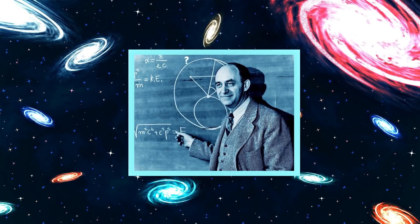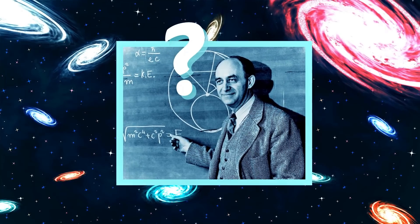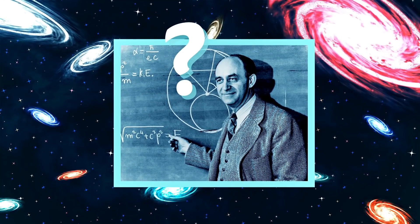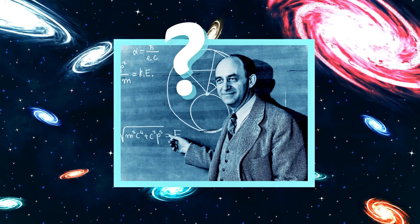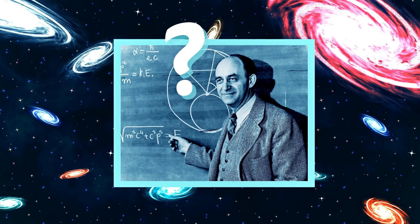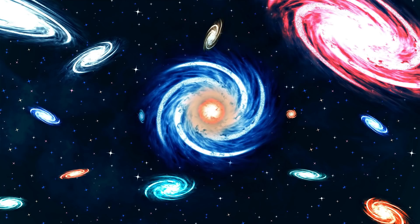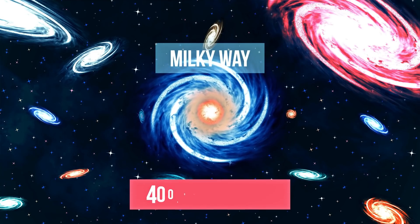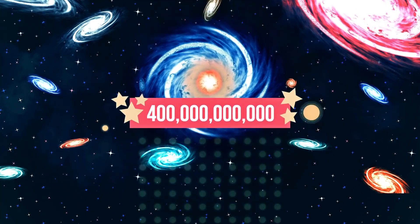In 1950, physicist Enrico Fermi asked this question amongst colleagues and quickly went to work on calculations on the probabilities of life existing elsewhere. Just in our own galaxy, the Milky Way, which is thought to contain up to 400 billion stars.